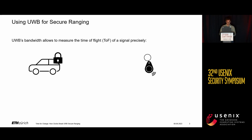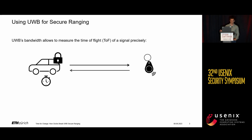Consider, for example, a locked car with a key with a certain clock. This clock measures the round-trip time of waveforms between itself and the key fob, and if this time is below a certain boundary, it might unlock.